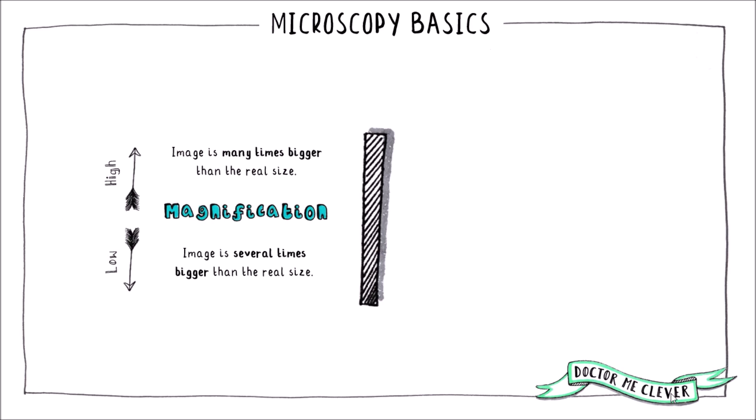At school, the microscopes you are provided with can likely magnify something to between 400 or 600 times, to give you some perspective. The magnification power is given as a number followed by an x, which is the number of times the image is made bigger — for example, 40x, 200x, or 600x.